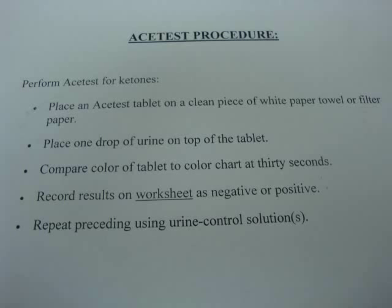The procedure for doing an Acetest is — let's look at our directions so we know what to do. This procedure must be followed exactly. Number one: remove the tablet from the bottle and recap promptly. Place the tablet on a clean dry white paper. Put one drop of urine directly on top of the tablet. Compare the color of the tablet to the color chart at 30 seconds after application of the specimen. Results are recorded as negative if no purple color is apparent on the tablet at the appropriate reading time. Positive results are recorded as small, moderate, or large on comparison with the color chart.